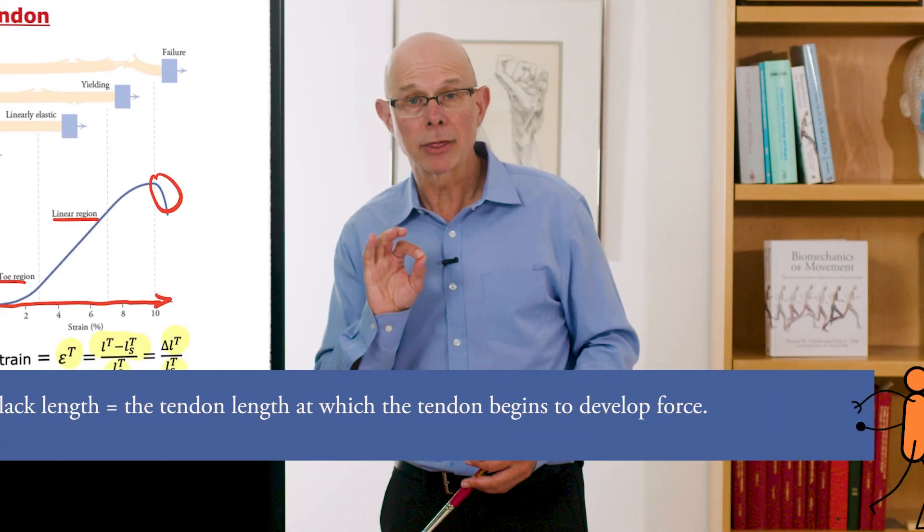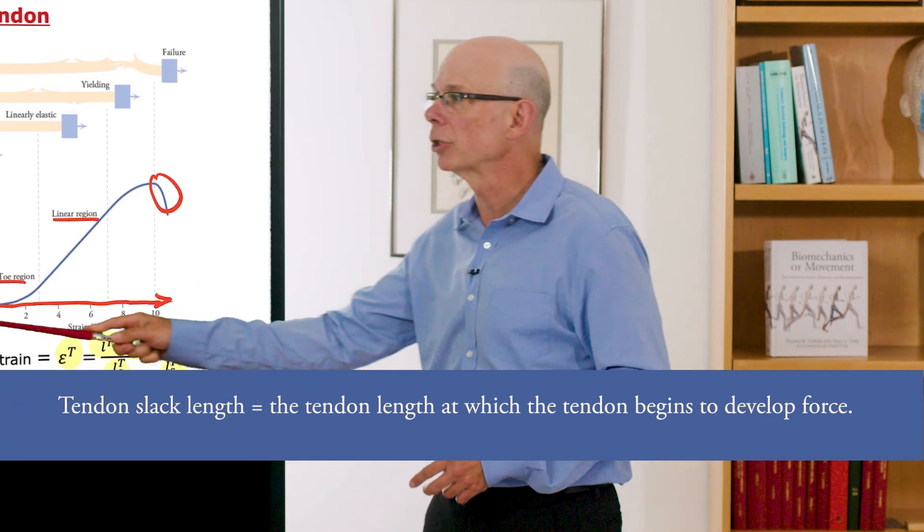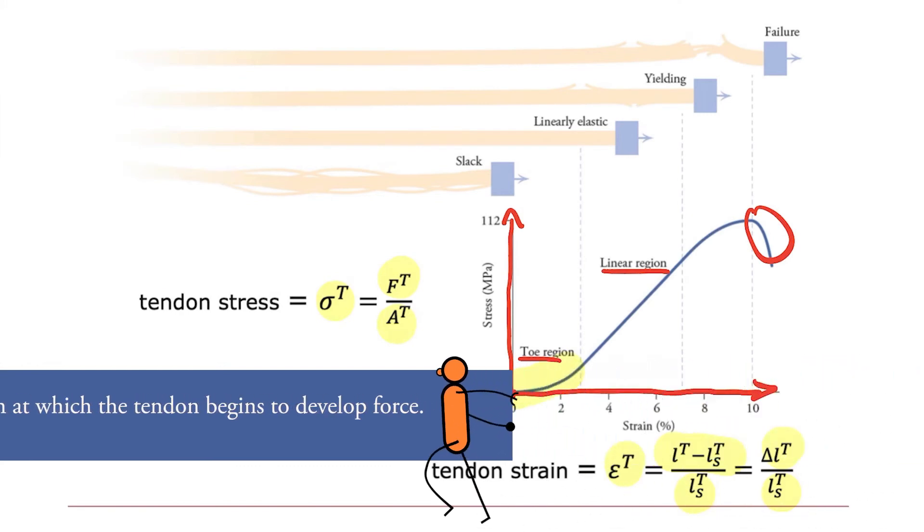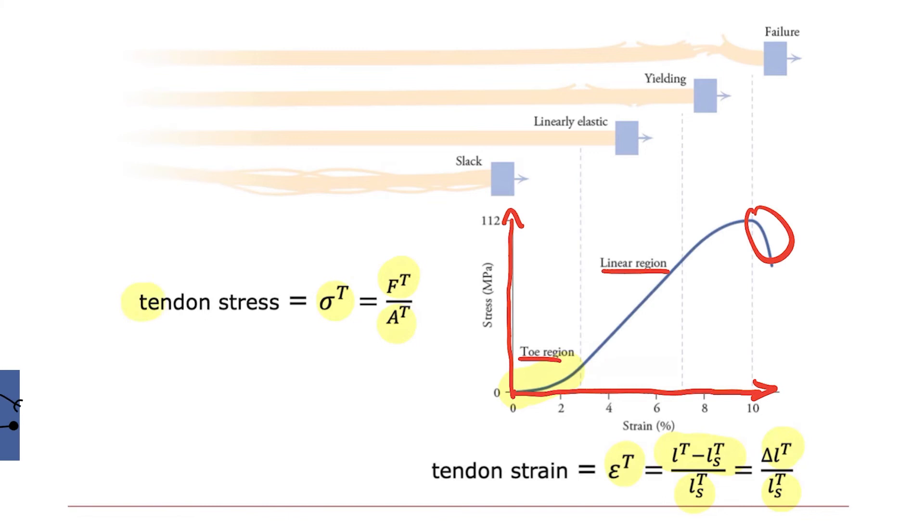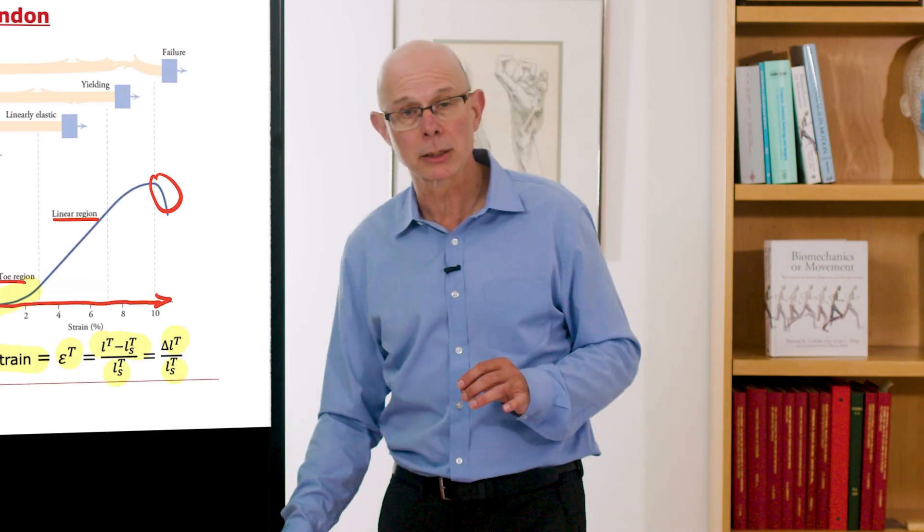The tendon slack length is the length of tendon at which it just begins to develop force, and you can see that here. So just where force starts to develop is the tendon slack length. So now we have defined tendon stress and tendon strain, and we can use those parameters to begin to make some calculations.